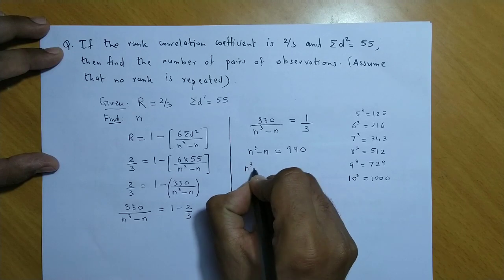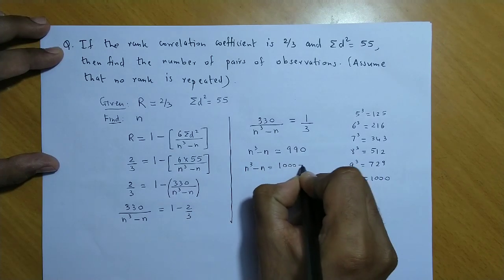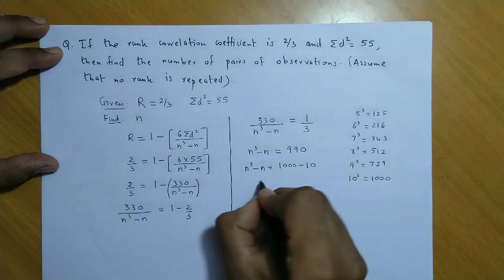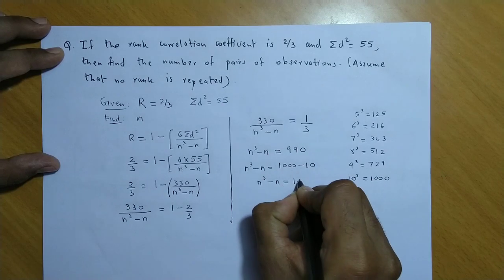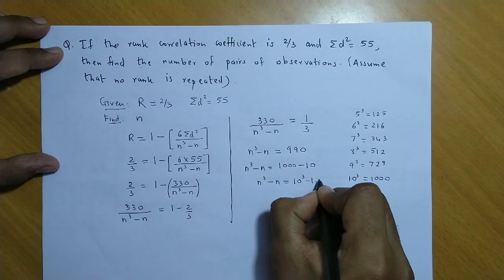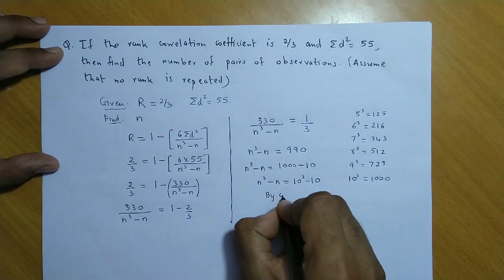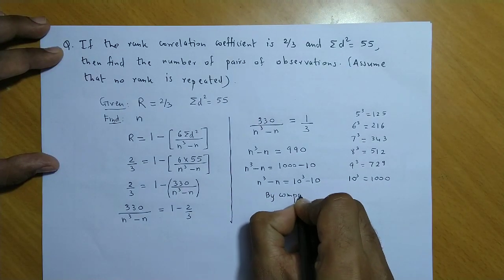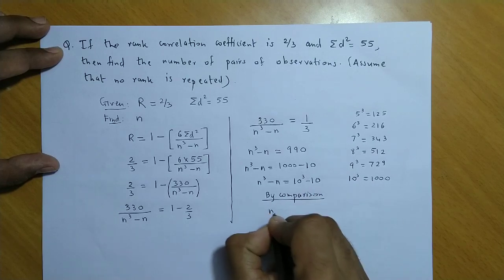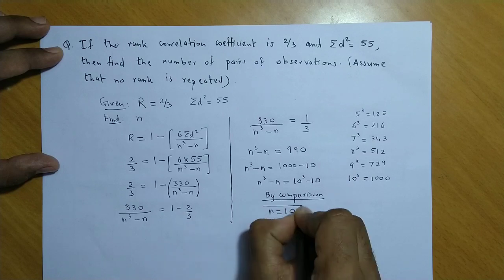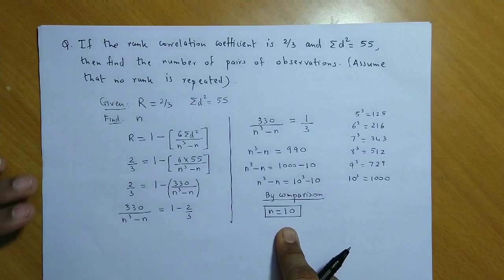So, hume isse express kar sakte hai as n cube minus n is 1000 minus 10, or n cube minus n is 10 cube minus 10. So, directly without solving the equation, hume direct dono side ka comparison kar sakte hai. Hume keh sakte hai, by comparison, n is equal to 10. Yani number of pairs of observation is 10.